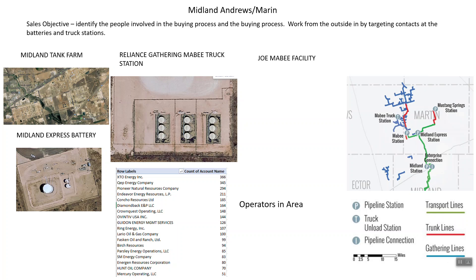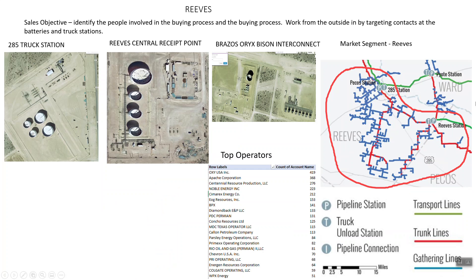When they decide to do an upgrade or add new gathering pipeline, what involvement does the field office have versus the head office, and what is their buying process? We want to identify, document, and understand that. In Reeves — a very popular area for them — there are lots of gathering pipelines, a truck station, a terminal station, a central point, and an interconnect. Each of those has people involved in maintenance and operations who would presumably be involved in decision-making on new projects.